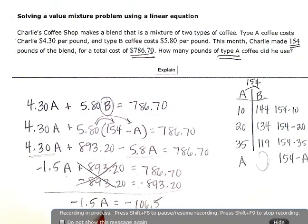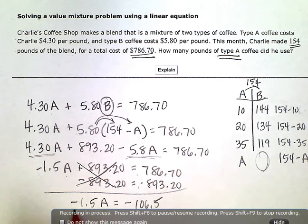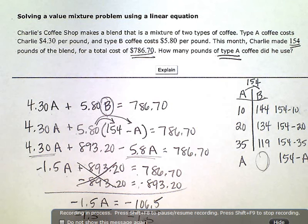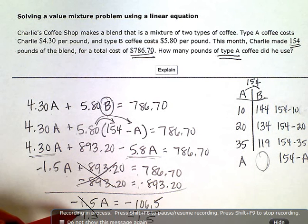Now to get the A by itself, the last thing I have to do is divide out the coefficient. So divide by negative 1.5, both sides. That reduces to 1 right there, 1A.